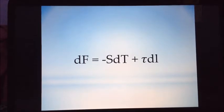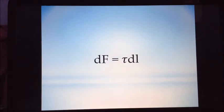df is equal to negative s dt plus tau dl. In this equation, the df can be determined under constant temperature and length. At constant temperature, entropy will roughly approach zero. So the equation turns df is equal to tau dl. This equation will be used in the first part of the experimentation.